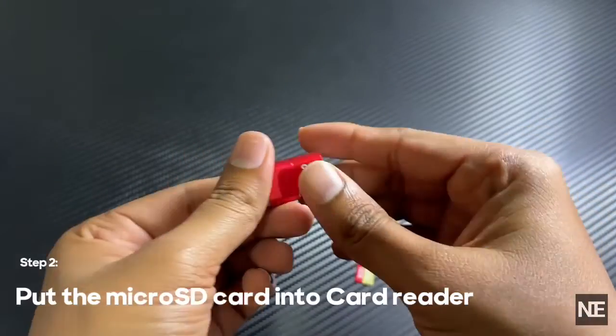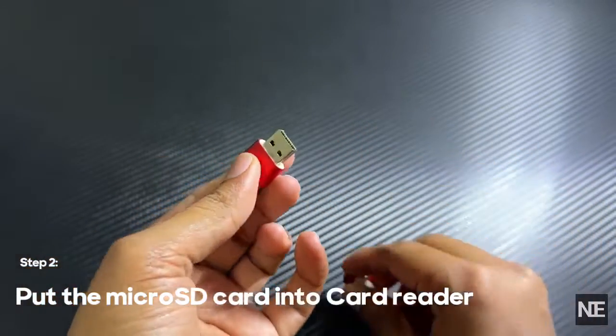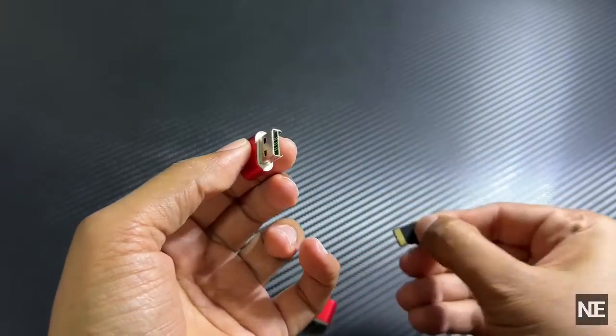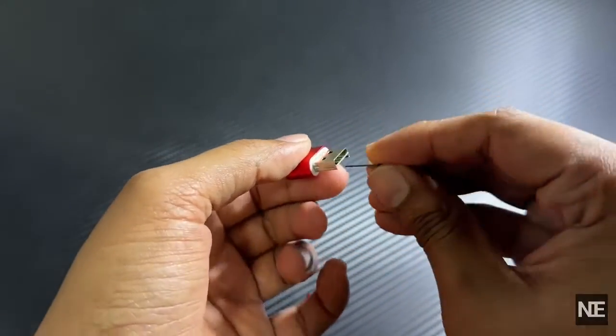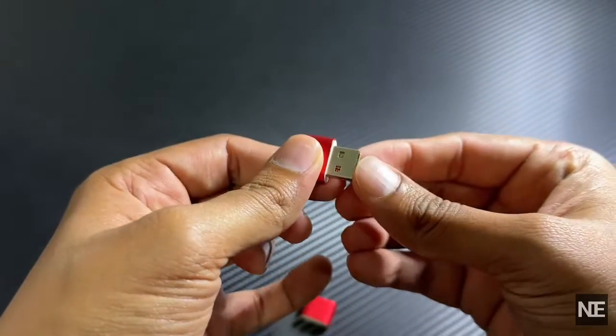Now let's move to your Windows PC to format the card. Put the microSD card into your computer's card reader. If your PC doesn't have a card slot, use a card reader that plugs into USB.